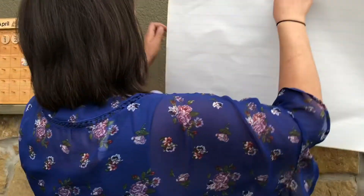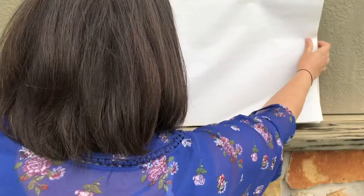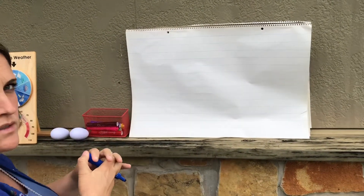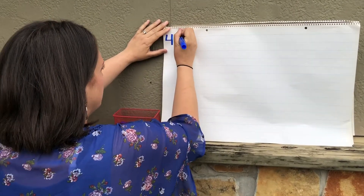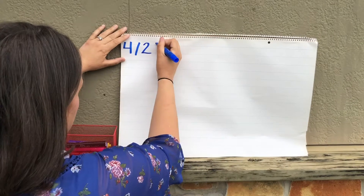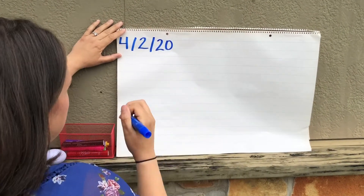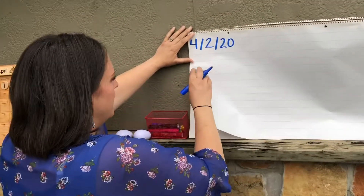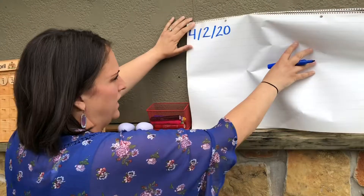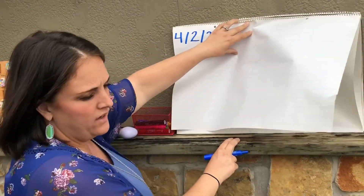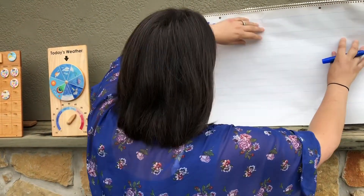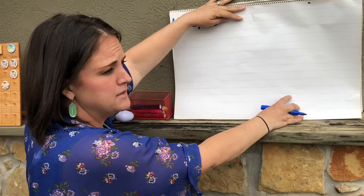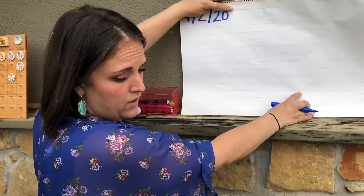I'm going to pull up morning message. We're going to write the short date. We're going to use four to represent the month of April, two to represent the day because it's the second day of the month, and 20 to represent the year. So our date is 4/2/20. Whenever we start a sentence, we always start with a capital letter and we end with a stop mark. A stop mark can be a period, an exclamation point, or a question mark. When we write our sentences, we use words to make up our sentence, we use letters to make up our words, and we have space between our words so that we know where the words start and stop.